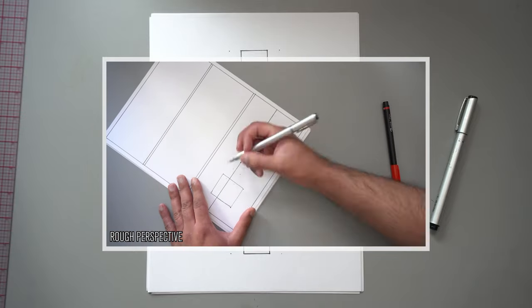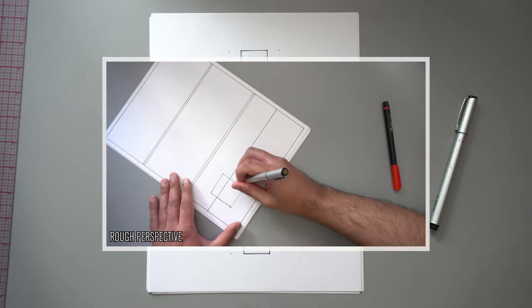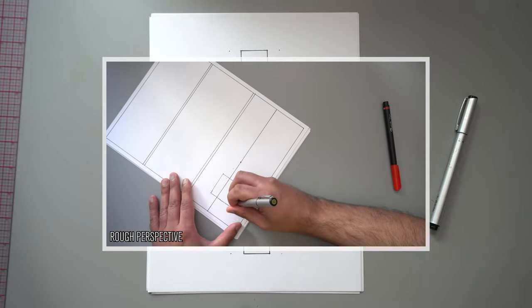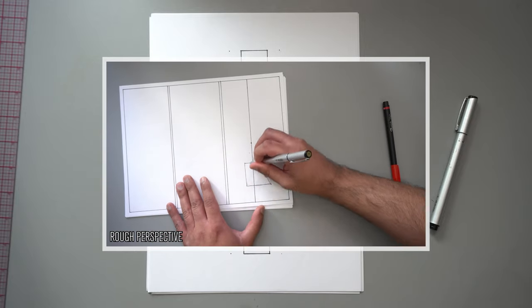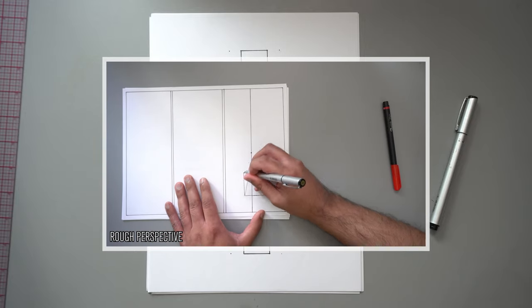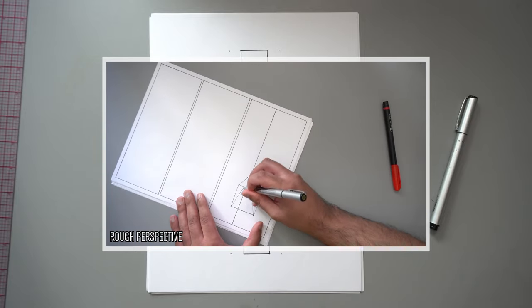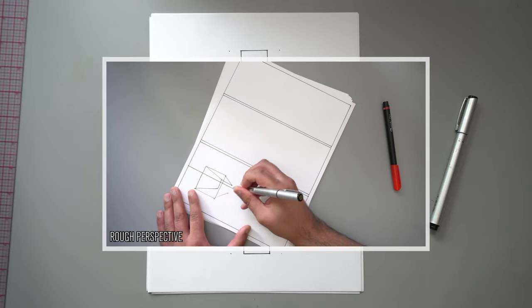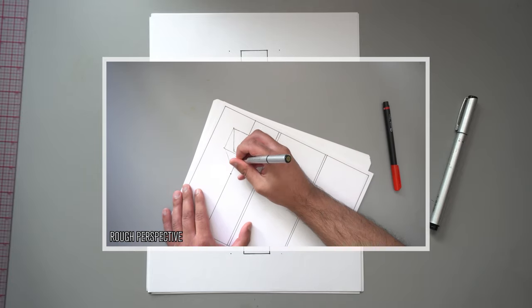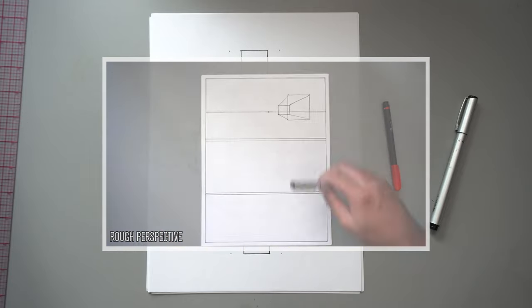In the rough perspective exercise, we were still allowed to mark out vanishing points, but we had to estimate without plotting lines all the way back. Instead we used our eyes and the ghosting method to estimate where the corners of our boxes should be placed.